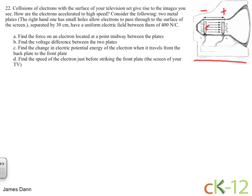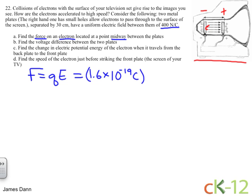Let's answer some questions on this problem. First of all, we want to find the force on an electron located at a point midway between the plates. We know that the force is equal to the charge times the electric field. The charge of an electron is 1.6 times 10 to the minus 19 coulombs. The electric field is stated in the problem — it's 400 N per coulomb. The coulombs cancel and we're left with units of newtons, and the answer is 6.4 times 10 to the minus 17 newtons.